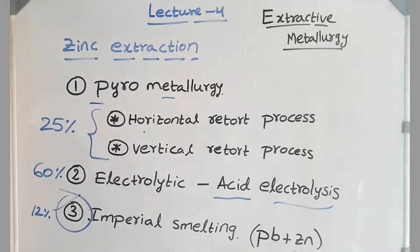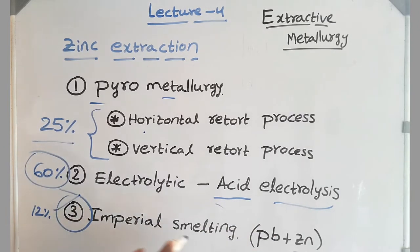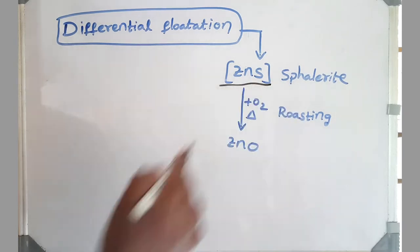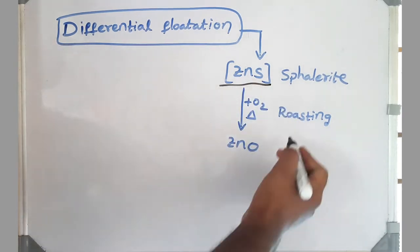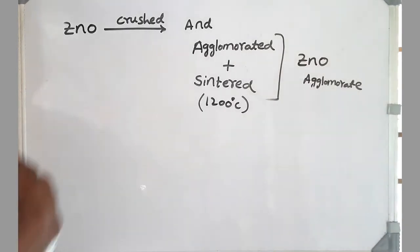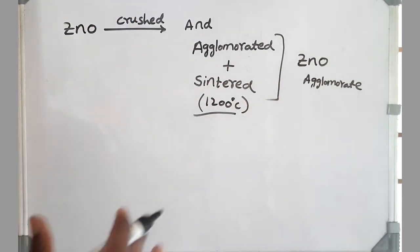The pyrometallurgy contributes to 25 percentage of total extraction of zinc, and the acid electrolysis contributes to almost 60 percentage, and imperial smelting is around 12 percentage. Friends, this is 12 percentage of zinc as well as 10 to 12 percentage of lead as well. First step involves differential flotation of mixture of all sulfides which gives us zinc rich concentrate, ZnS. We go for roasting to convert sulfide into oxide because oxides are more reducible than sulfides. The obtained ZnO is again crushed and then agglomerated and sintered at 1200 degrees centigrade. Now we got our main raw material: ZnO agglomerate.